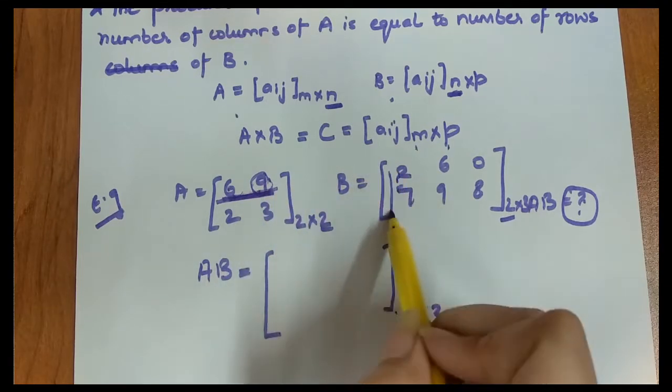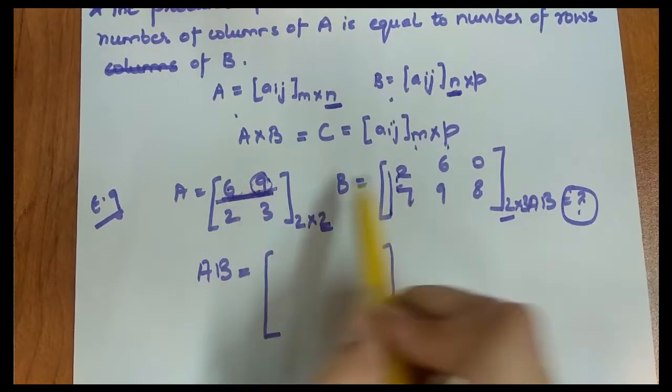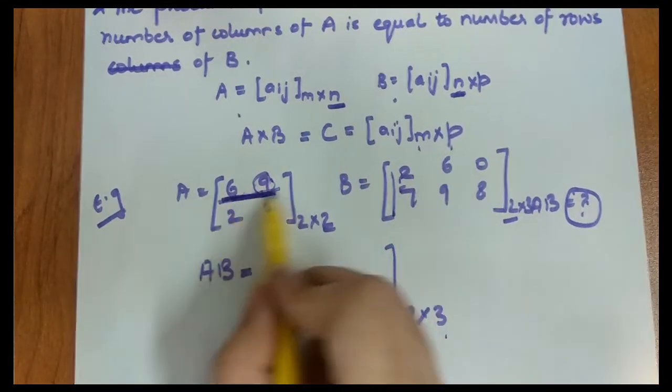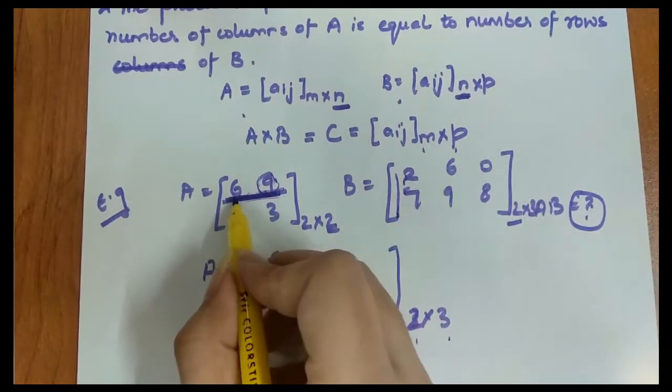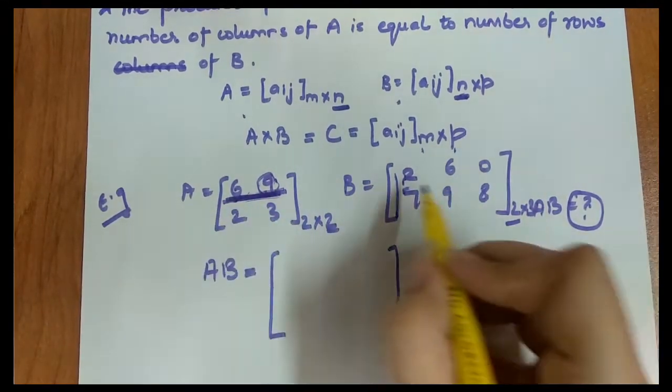Matrix multiplication happens first row column-wise, okay? Our matrix multiplication starts by considering the first row. The first row has to be multiplied with all columns.